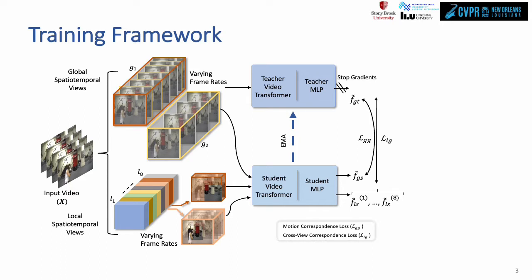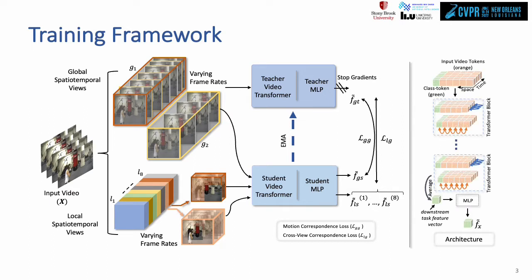The target view is processed by an exponential moving average teacher model, and the online student model processes the remaining views. This teacher-student self-distillation setup is motivated from image self-supervision cases. In terms of network architecture, a standard ViT with space-time-separated attention and class token is used as the backbone with an MLP predictor head for the target feature regression.